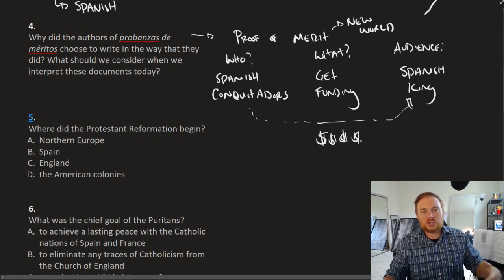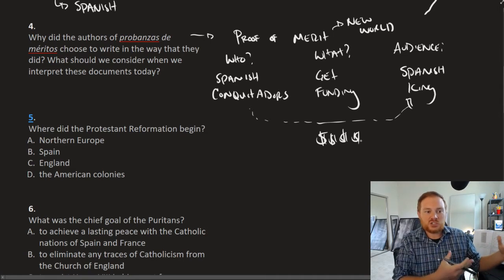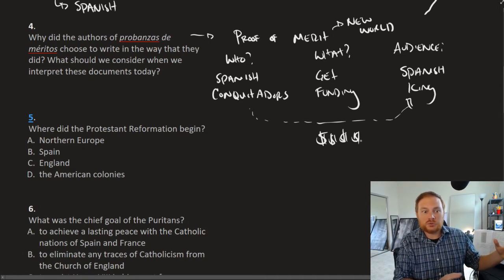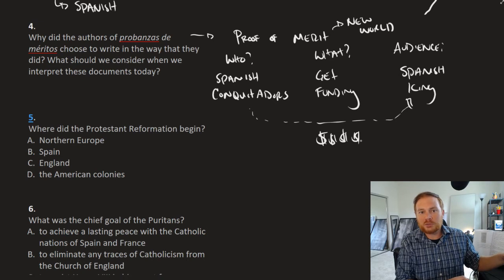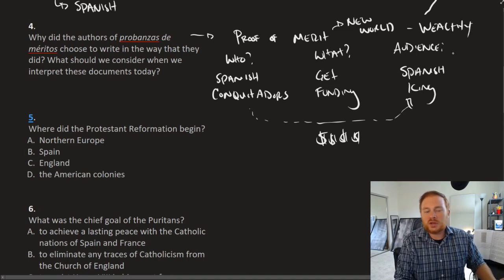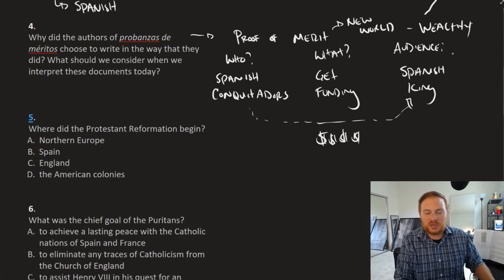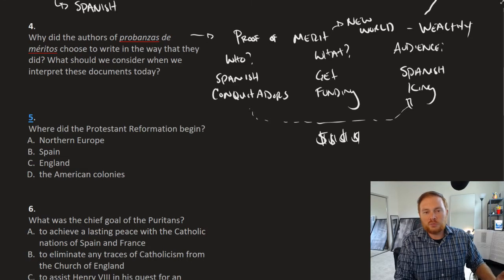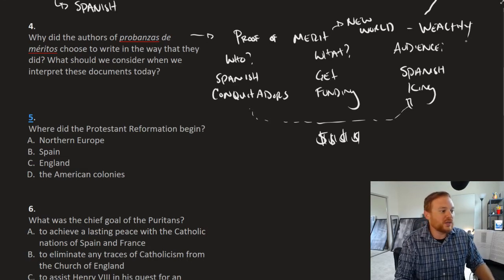Recall that for Spanish conquistadors, if the Spanish king gave you authority to go to the New World and extract whatever wealth could be found, you had a vested interest in portraying the New World as being exceptionally wealthy. So we've got to keep in mind that although they do describe the New World, these proof of merits that we have today, they were also written with the purpose to over-exaggerate the amount of wealth and opportunity that potentially the New World provided.